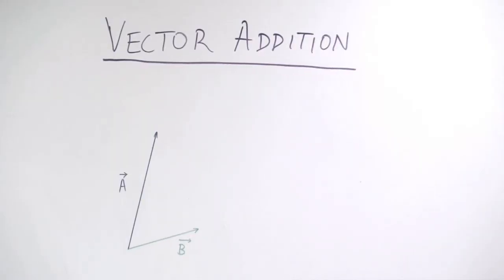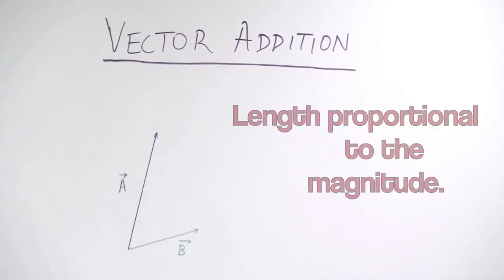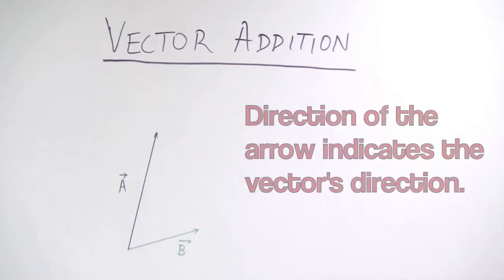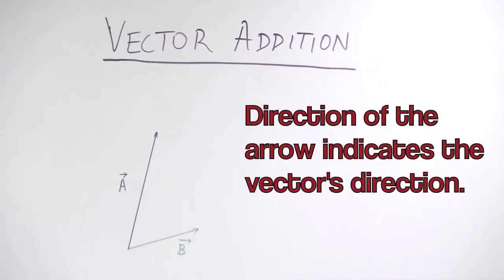Force is a vector quantity. Vectors can be represented by arrows where the length of the arrow is proportional to the magnitude of the vector and the direction indicates the vector's direction.